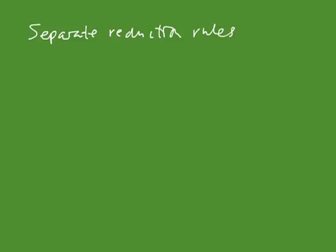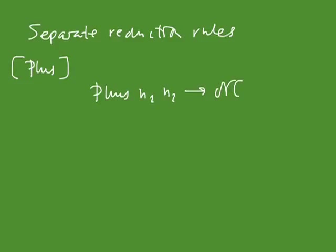You can extend the semantics in two different ways. One is to have separate reduction rules for the new constants. Suppose we had a constant called plus — then you have a plus rule that says that plus applied to two numerals reduces to the sum of the numbers denoted by those numerals.